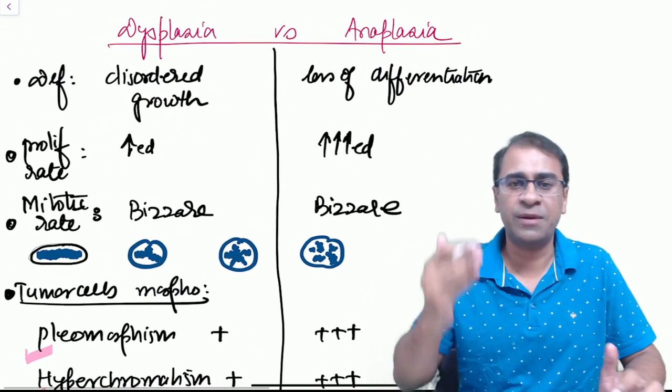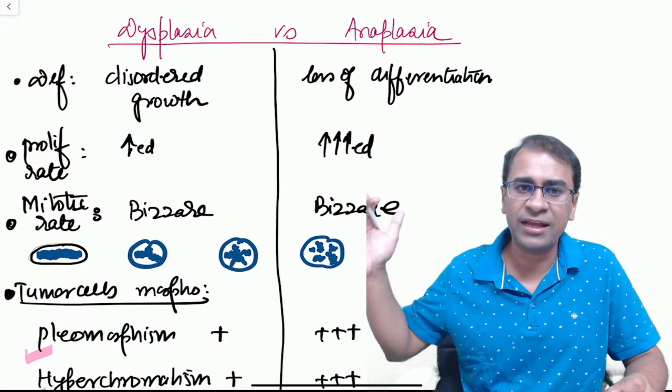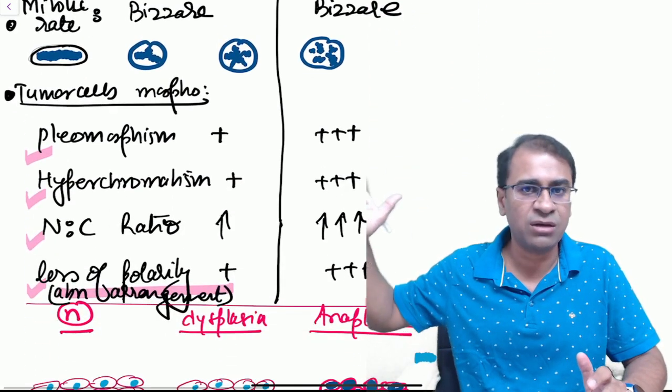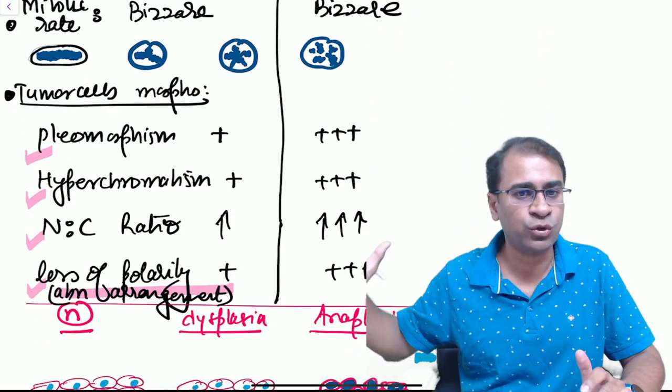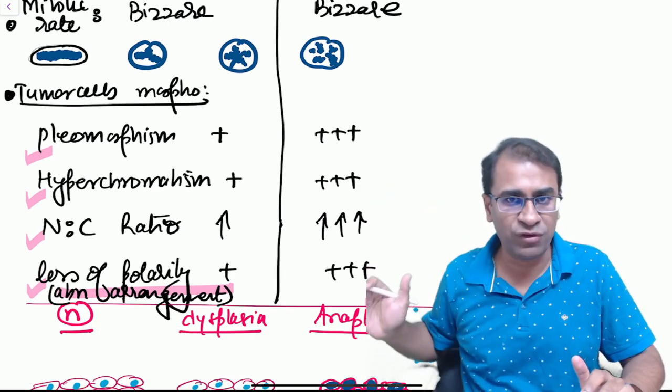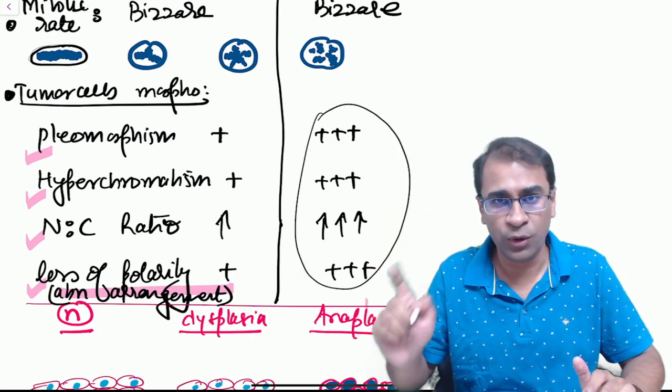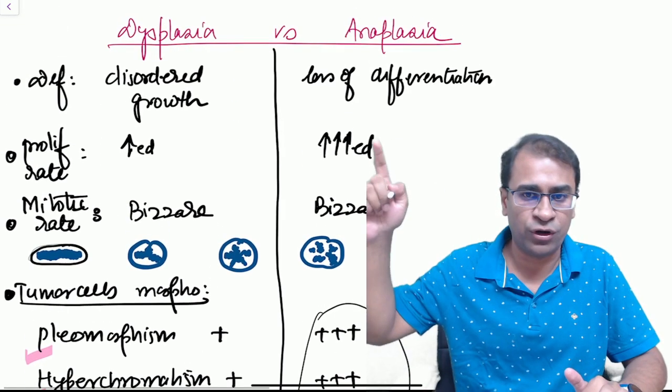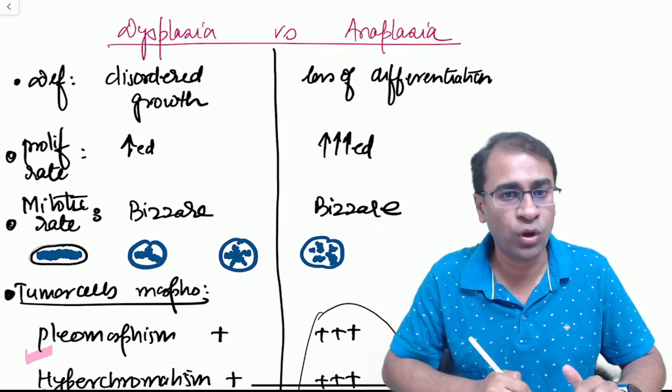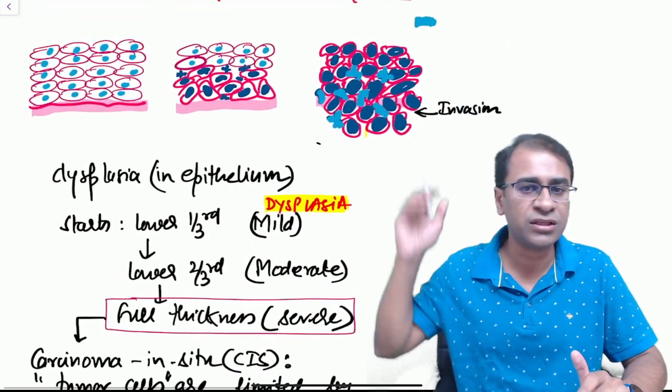What is the difference between dysplasia and anaplasia? Common findings are pleomorphism, hyperchromatism, high N:C ratio, and loss of polarity. All these four features are more in anaplasia compared to dysplasia. Definition-wise, dysplasia is disordered growth while anaplasia is called loss of differentiation.